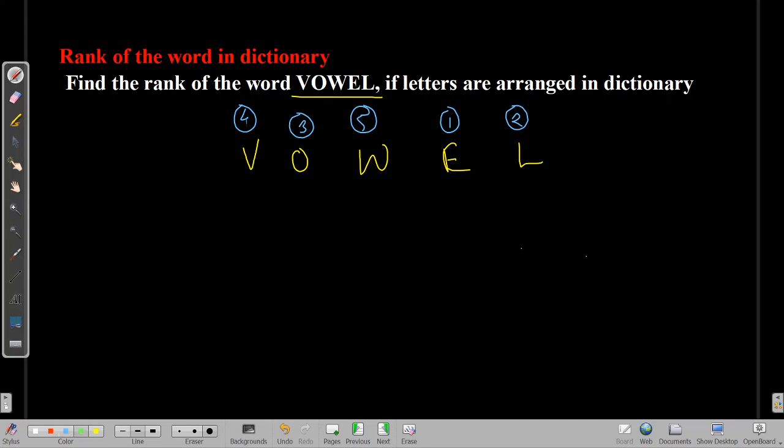Below it who is there? 3 is there, 1 is there, 2 is there. So we have 3 numbers less than 4. Below 3 who is there? 1 and 2. So here will come 2. Below 5 who is there? 2. Below 1 who is there? 0. Below 2 also no one. 0.